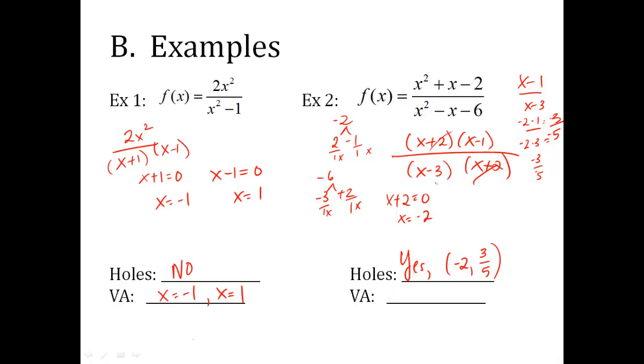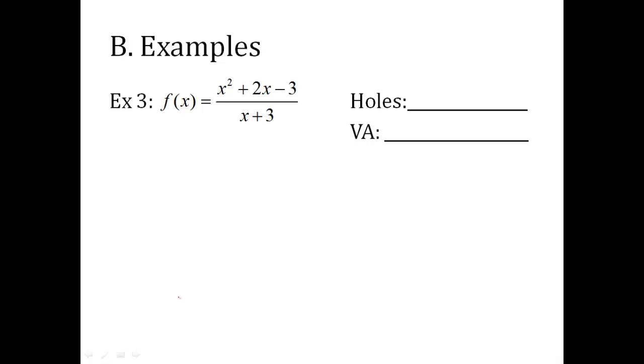Vertical asymptote. Remember, you set whatever factor is left over equal to zero. X minus three equals zero, so x is three. The other factors have cancelled and gone away. You just deal with what's left.